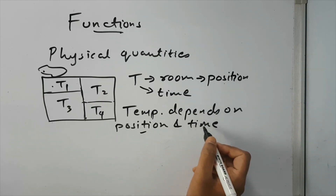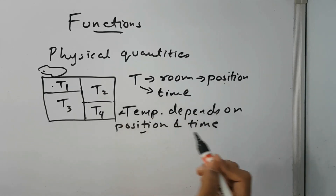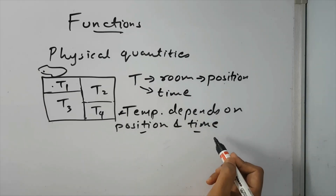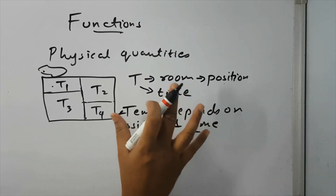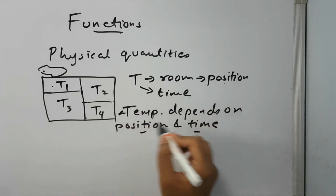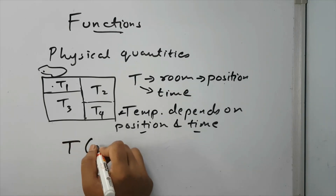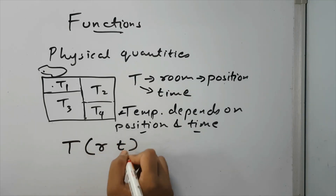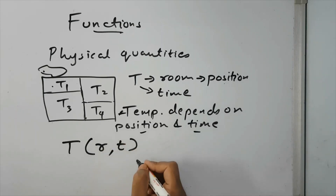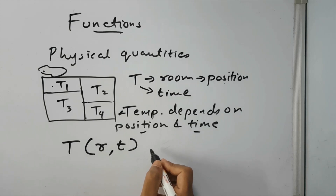And if you go to the same place at different times, the temperature will be different. So the bottom line is that temperature depends on two things: position and time. This particular concept is mathematically represented like this: T is a function of position and time. R is position and small t is time.